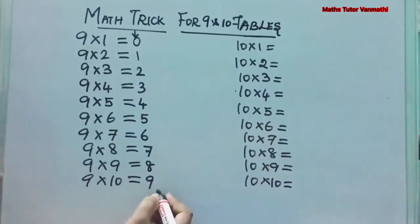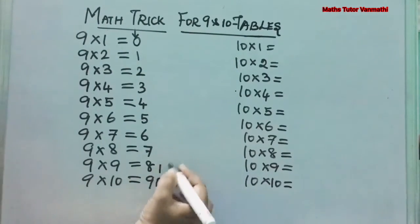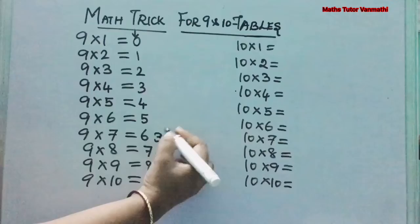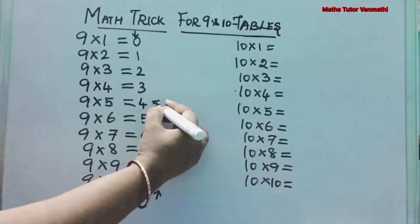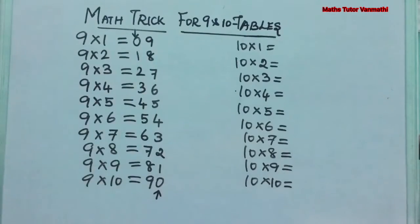Next what we are going to do means writing these numbers in the reverse order. From bottom to top. Whole number 0, 1, 2, 3, 4, 5, 6, 7, 8, 9. Clear? 9 tables is the easiest of all tables if you know the trick.